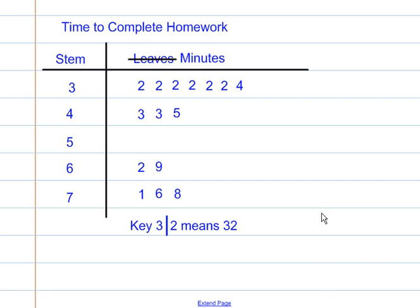To find the median on a stem and leaf plot, the first thing you do is count how many pieces of data there are.